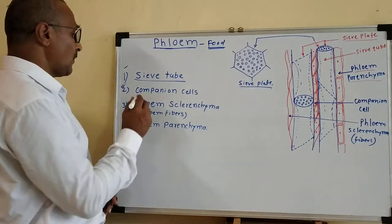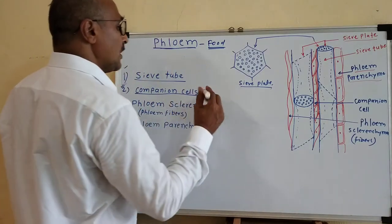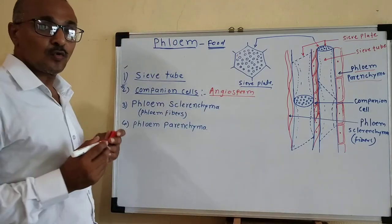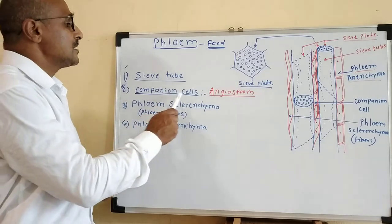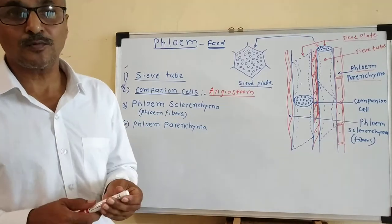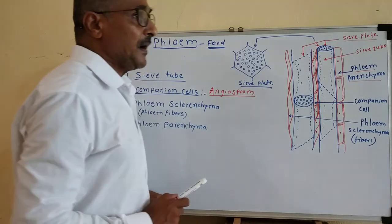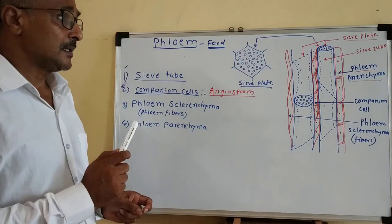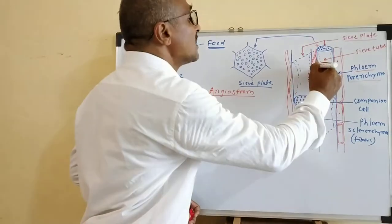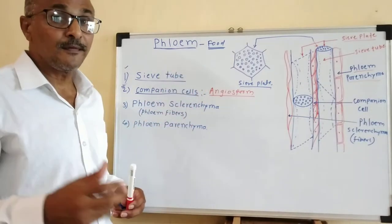The most important thing about the companion cells is that they are only present in the plants of angiosperms — in the group of angiospermic plants only. These companion cells are one of the important characteristic features of angiospermic plants; they are not present in other groups of plants like pteridophytes and gymnosperms. The nucleus which is in the companion cell has control over the mechanism of the sieve tube.